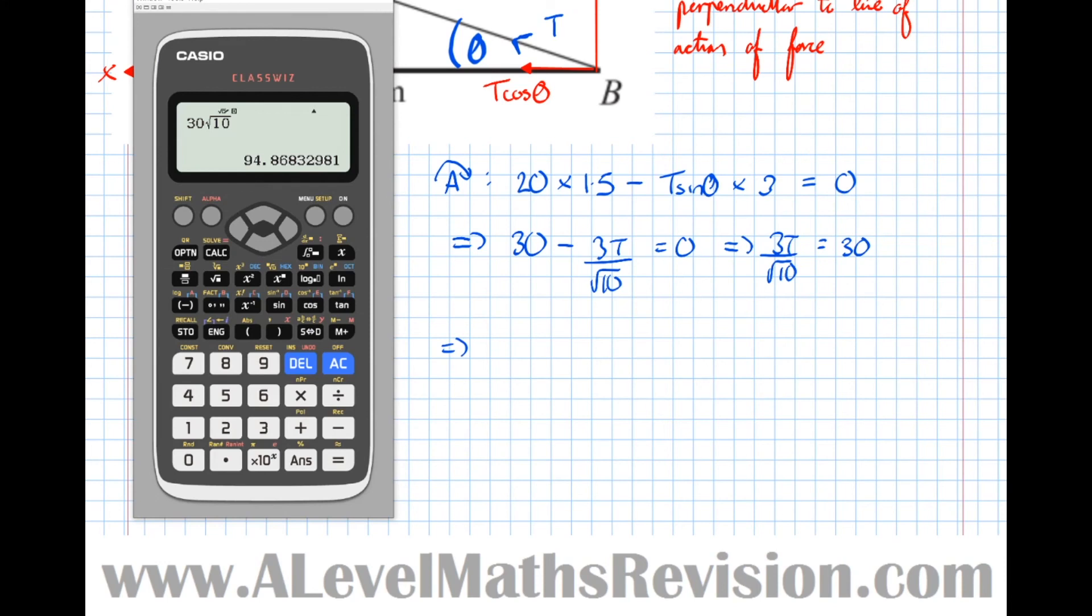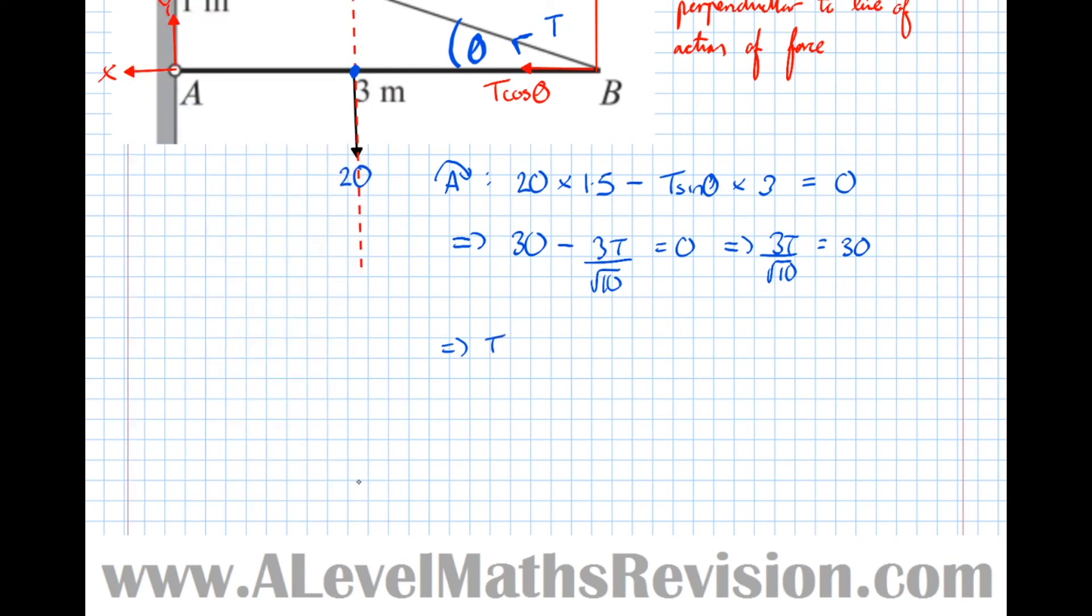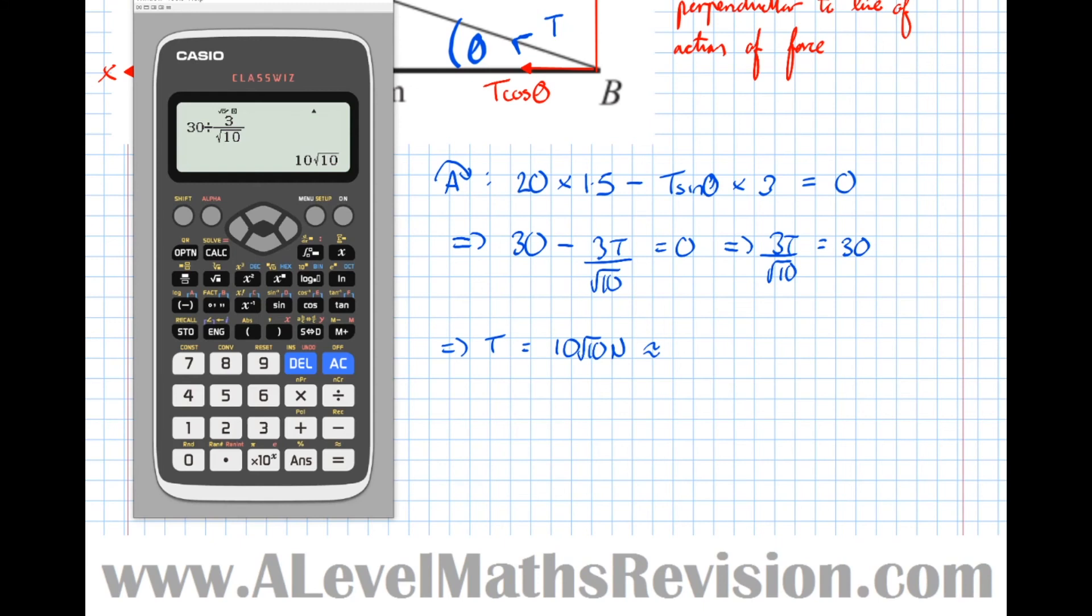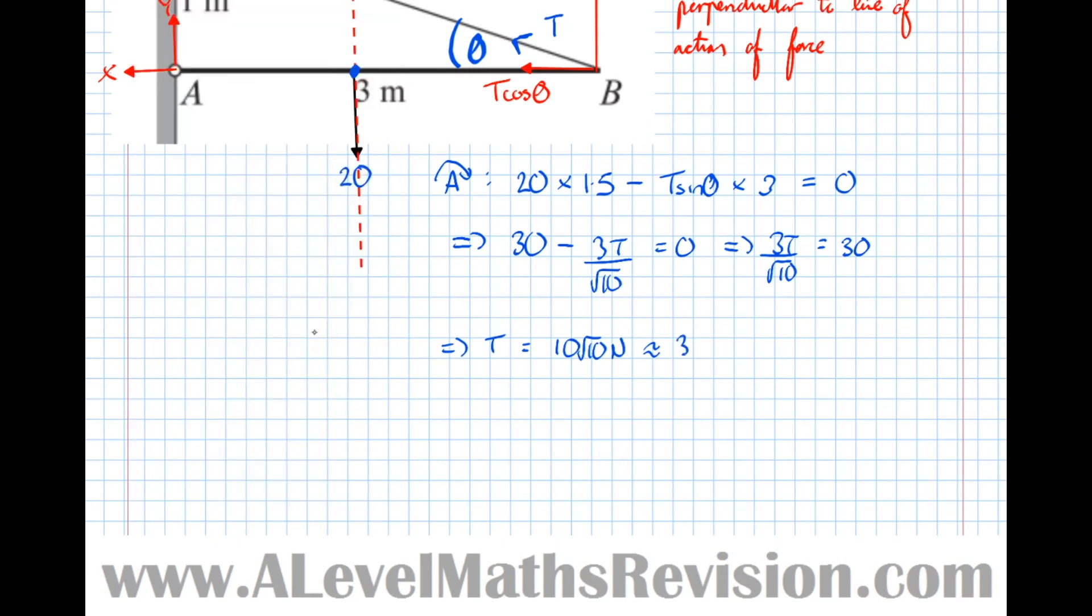And put that in the calculator. 30 divided by 3 over root 10 equals 10 root 10. So that means that T equals 10 root 10 newtons, which is approximately equal to 31.62 newtons. And that's what we were asked to find.